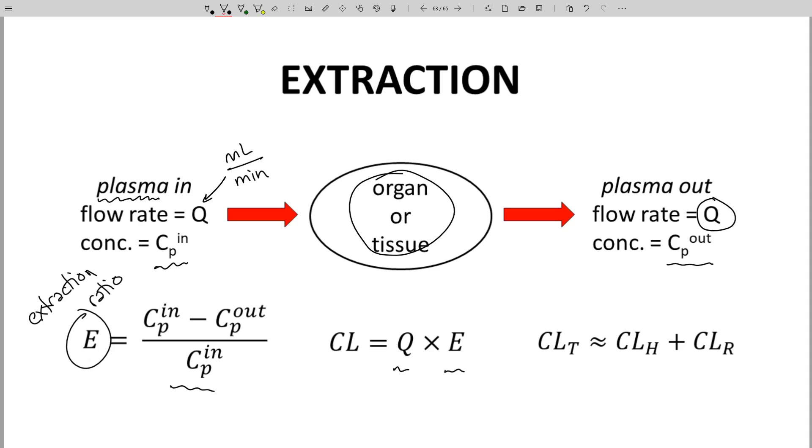Since other organs often play a small role in clearance, total clearance can be approximated by just CLH, that's hepatic, and CLR, renal clearance.